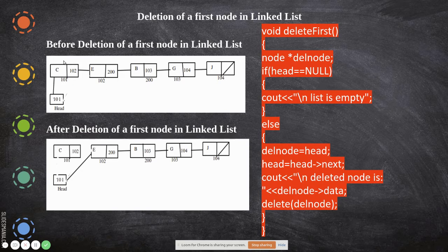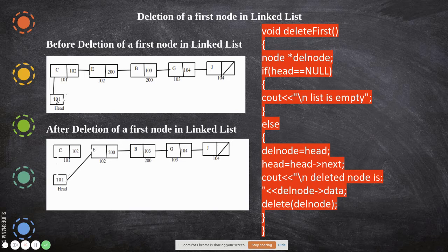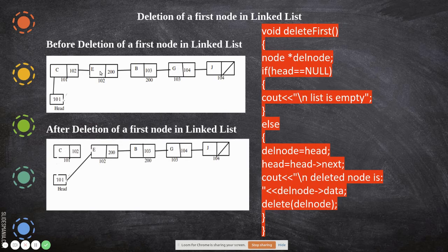So how can you remove the first node? To remove the first node, the head has to be changed to point to the next node. So in the head node, you make the address of the first node be overwritten — the head has to now point to the next node. That's what we are going to see.